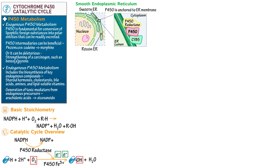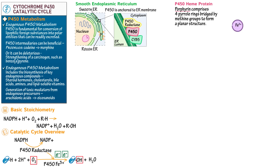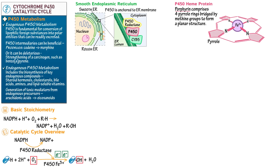Before we address the catalytic cycle, let's learn the three-dimensional structure of the P450 heme protein, which is a porphyrin structure. Porphyrin comprises four pyrrole rings bridged by methane groups to form a planar structure. The heme protein active site of cytochrome P450 comprises a central iron atom with six binding sites. Four of these bind to the nitrogen atoms of the porphyrin; pyrrole is a five-membered ring consisting of one nitrogen, four carbons, and five hydrogens. The fifth bond goes to cysteine, and the final bond is available to bind oxygen, which plays a key role in P450 oxidation reactions.